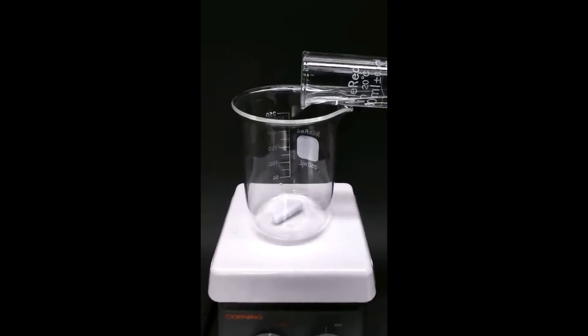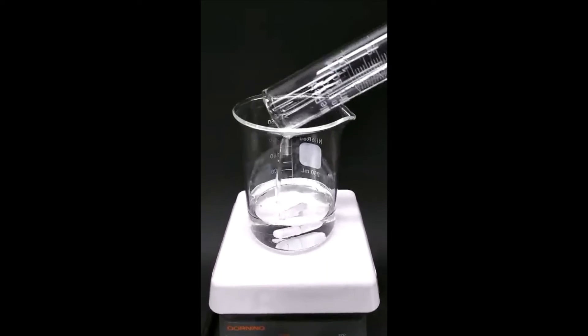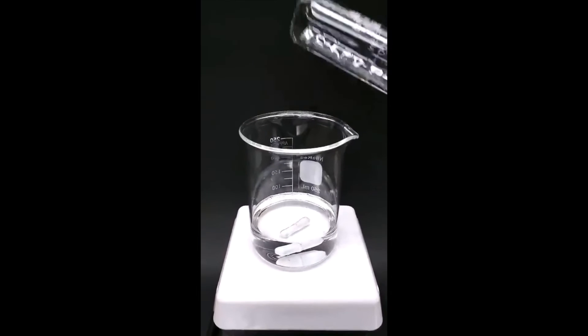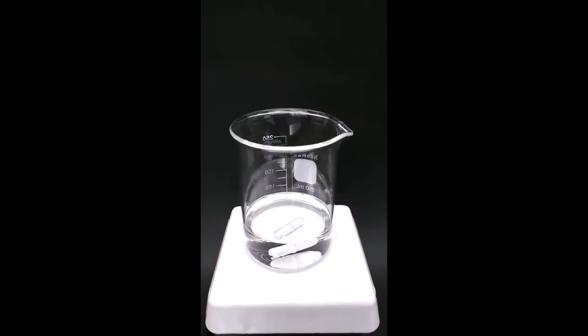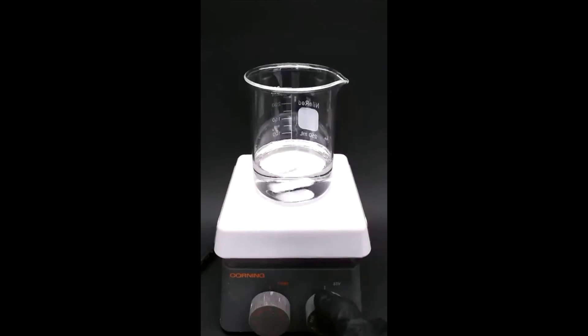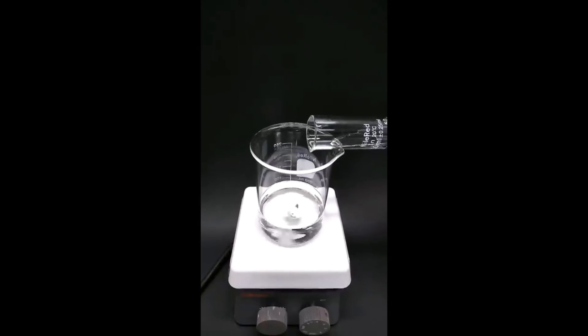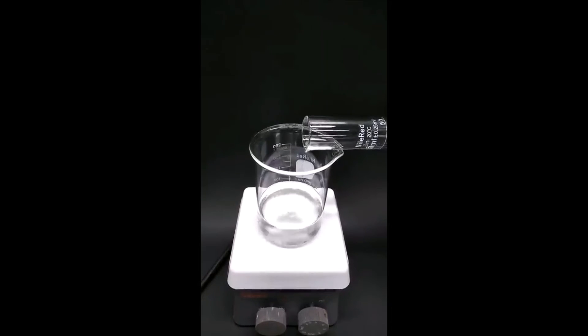So for no reason, I've decided to make some piranha solution, which is probably one of the angriest liquids that you can make in the lab. To do this, I just have to start with some concentrated sulfuric acid and then carefully add 30% hydrogen peroxide.